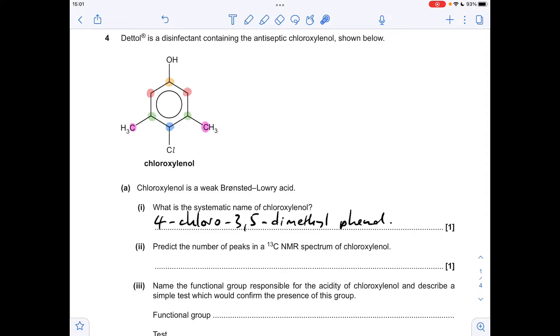Next part, the number of peaks in the carbon-13 NMR spectrum. So we've got a unique environment here. Their equivalent, their equivalent, that's unique, their equivalent. So that's a total of 5.